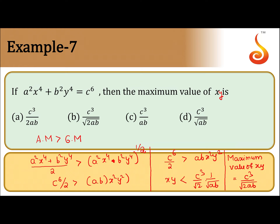The question asks for the maximum of xy — a combination of two variables. Using the simple concept that Arithmetic Mean is greater than Geometric Mean: (a + b) / 2 ≥ √(ab). Applying this, since a²x⁴ + b²y⁴ = c⁶, we get c⁶ / 2 is greater than ab · x²y².